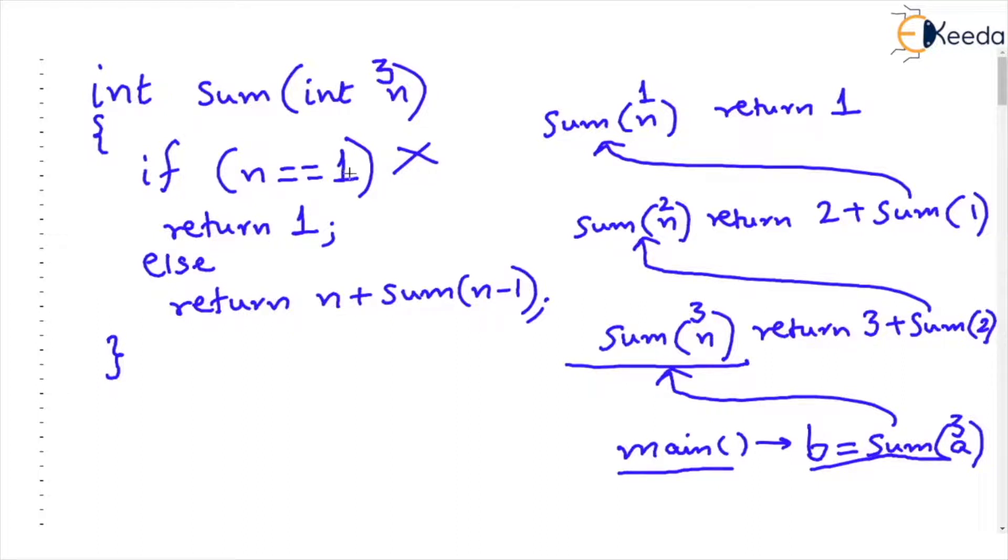So the if portion will not run and the else will run which says it will return 3 plus sum of 2. So that's what has been written here. Check sum 3 or sum n when n is 3 is going to return 3 plus sum 2 but this sum 2 is a recursive call.